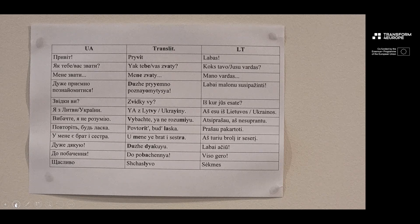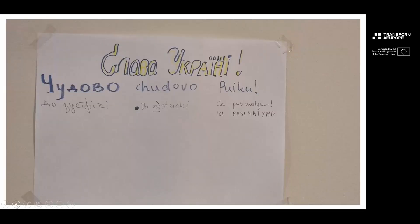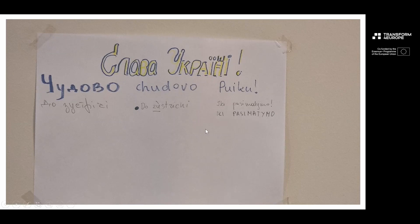The kids are sometimes playing scrabble using Lithuanian words — you can already see the Lithuanian word 'labas' meaning 'hi' or 'hello' arranged on the board. On the wall we have short vocabulary: important and frequent words or phrases in Ukrainian, shown in Cyrillic alphabet, then transliteration in the Latin alphabet, and then the translation into Lithuanian. For example: hello, what's your name, my name is, nice to meet you, where are you from, I'm from Lithuania/Ukraine, I'm sorry, I don't understand, please repeat — thank you, goodbye, and good luck.